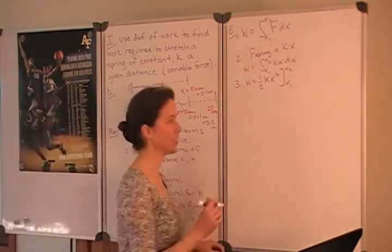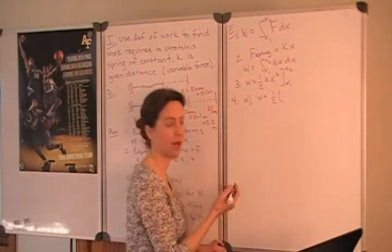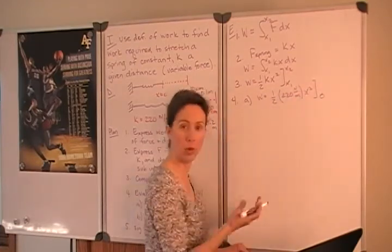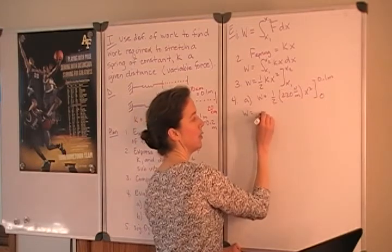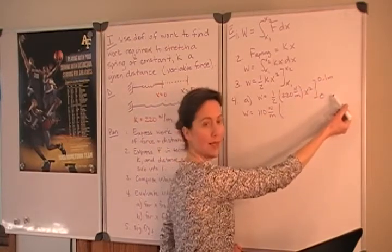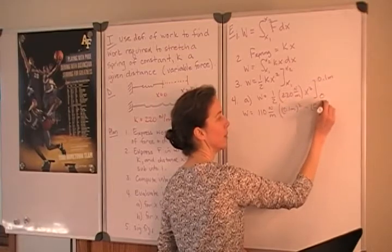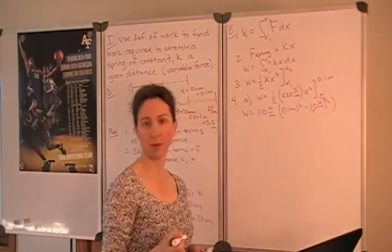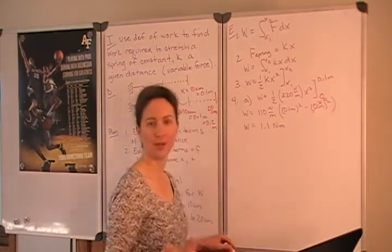So now we are ready to consider the specific conditions we have been given. In part A, the work will be equal to one half times our spring constant, which was 220 newtons per meter, times X squared, where X squared will go from 0, where we start, to 0.1 meters. So we can simplify this first term a little bit to 110 newtons per meter, times we evaluate from the final position and subtract the initial position. So we have 0.1 meters squared minus 0 meters squared. Now obviously that second term is 0, but I include it for completion because that's not always the case, and it won't be the case in part B. So we compute this carefully and we find that the work is 1.1 newton meters, and a newton meter is the same thing as a joule.